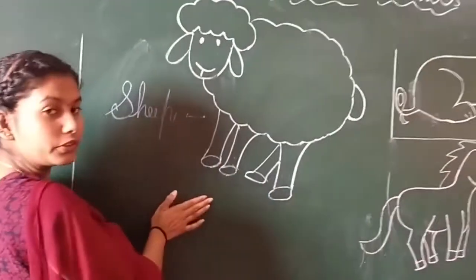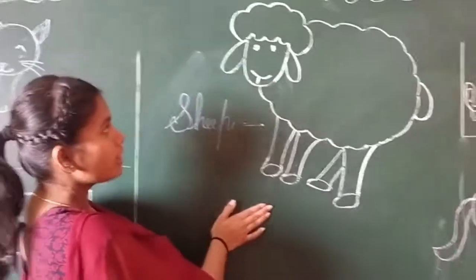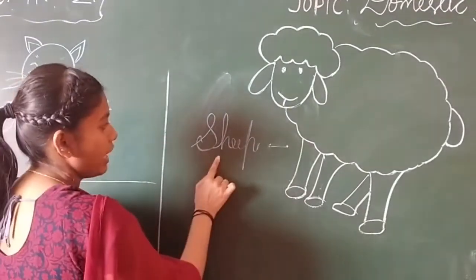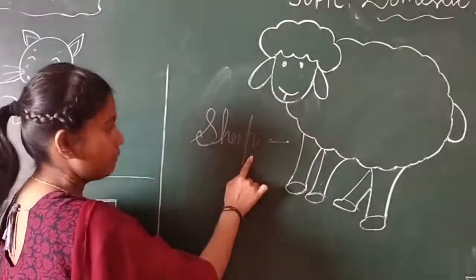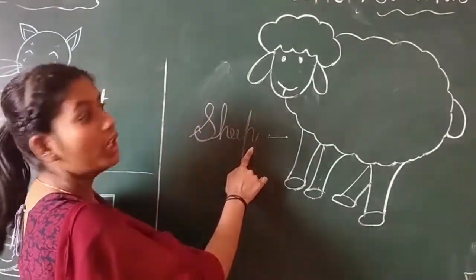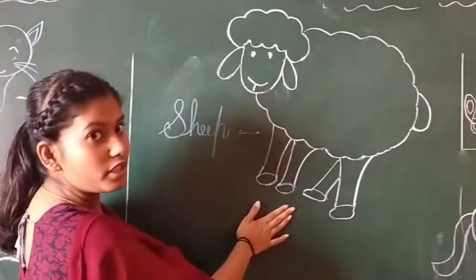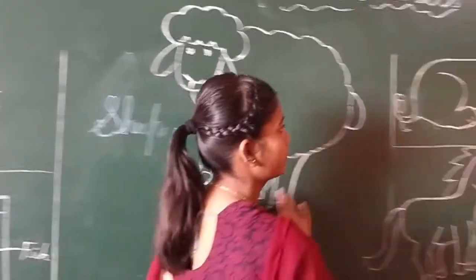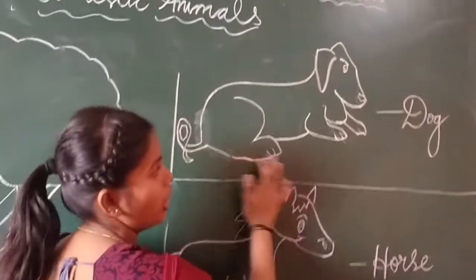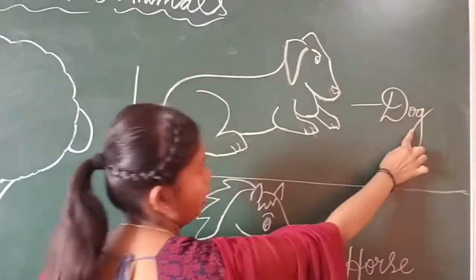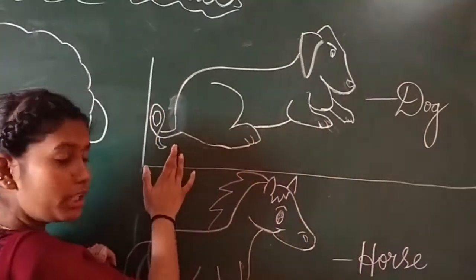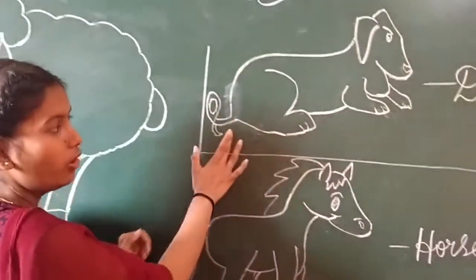You know what is this? This is a sheep. S-H-E-E-P, sheep. Sheep gives us wool. So then, this is a dog. D-O-G, dog. Dog guards around the home.